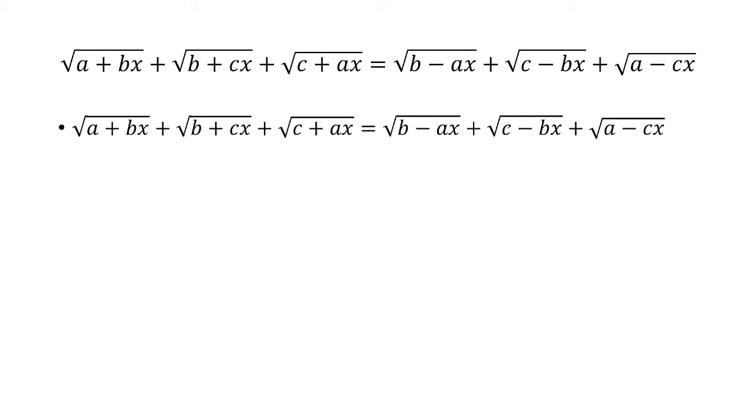Then b and c go together, similar here with b and c, but c is a coefficient of x and negative b is a coefficient of x. And then finally c and a go together here, but the coefficient of x is a and the coefficient of x is negative c.